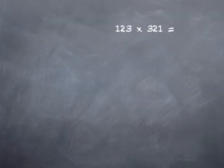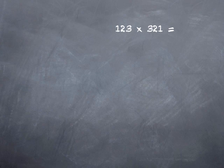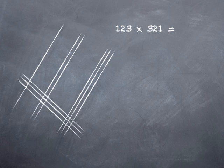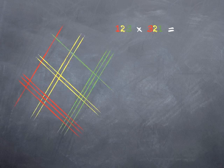If we want a trickier problem, one that requires regrouping, we can try 123 times 321. There's 3 hundreds, 2 tens, and 1 one. And let's color code them again. Hundreds, tens, ones.